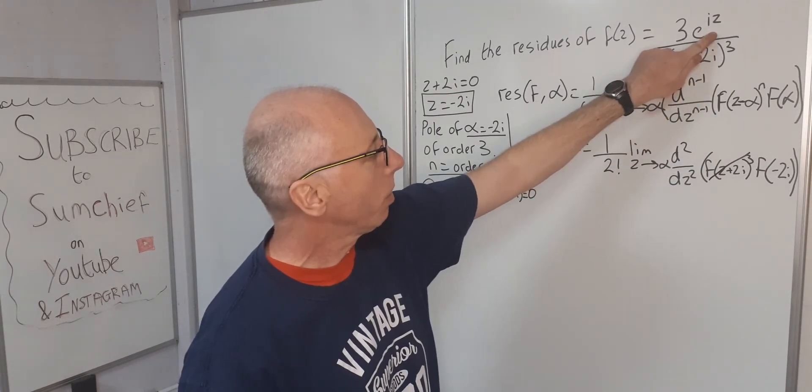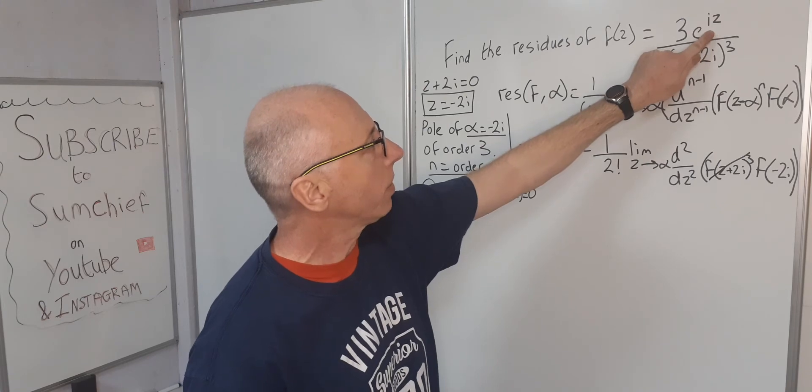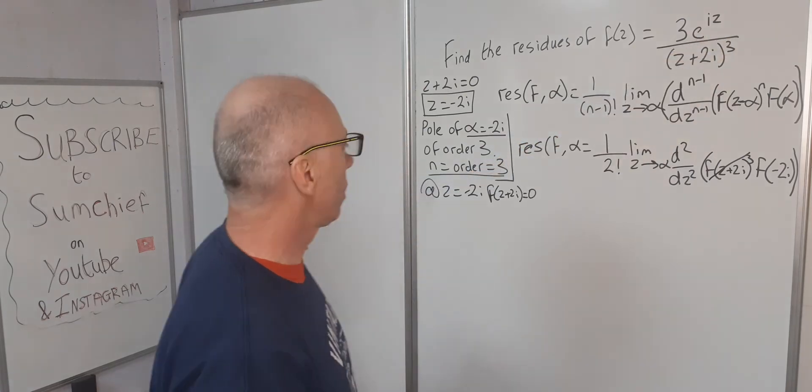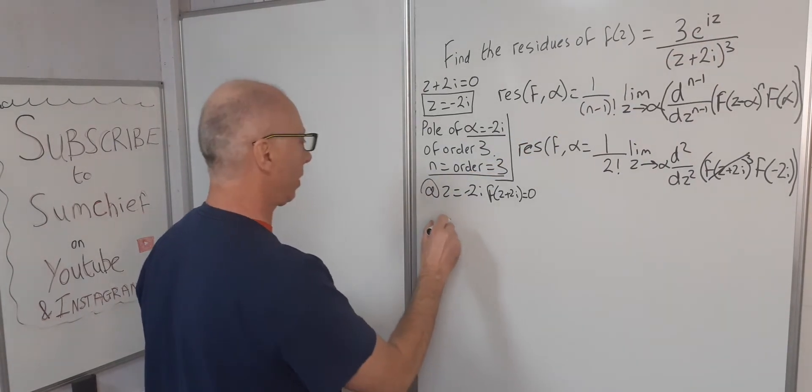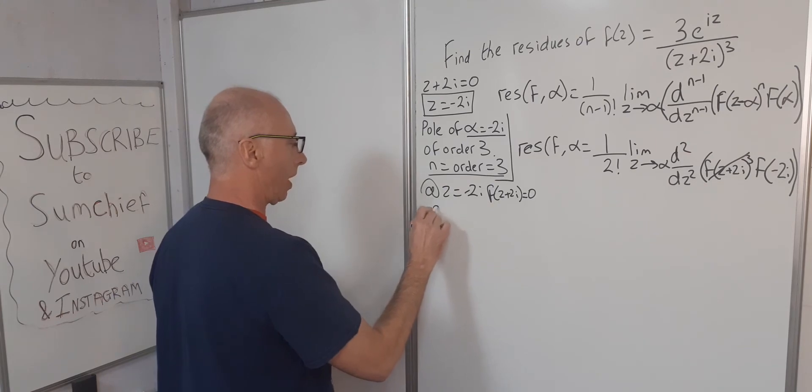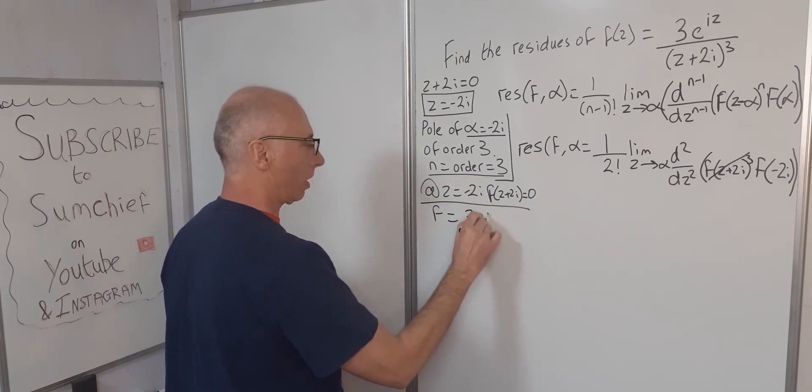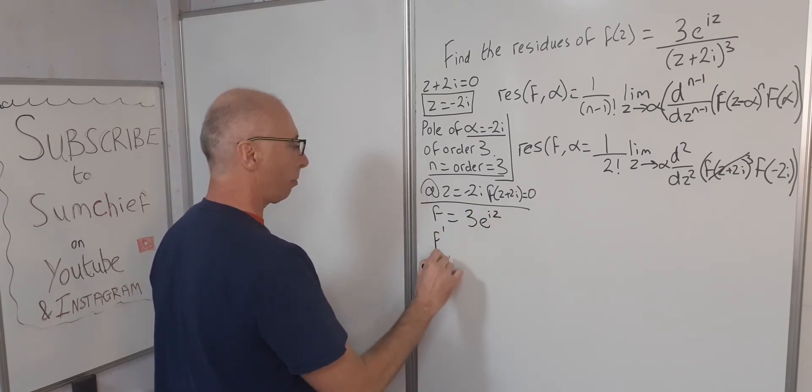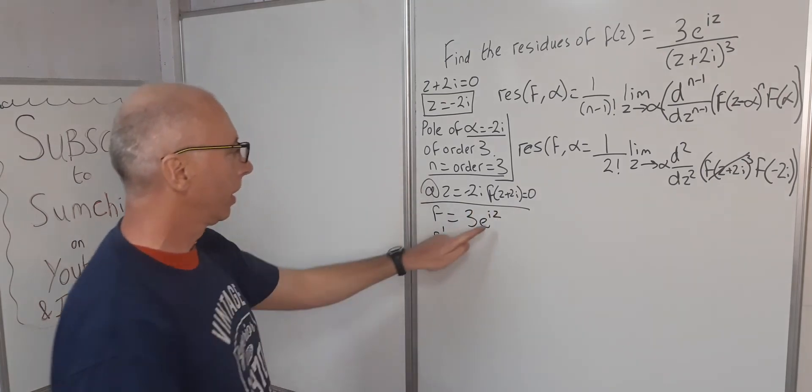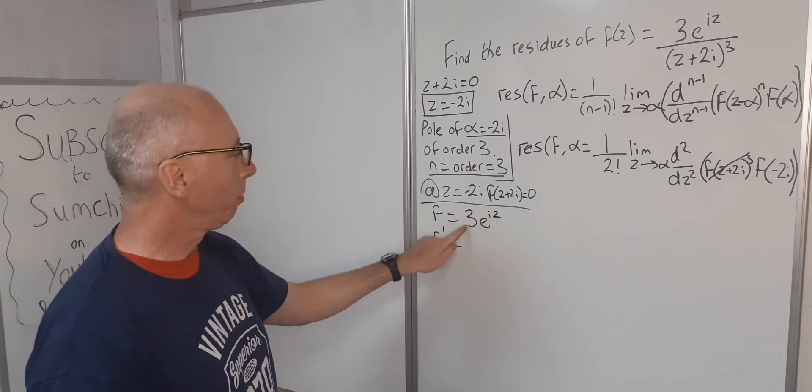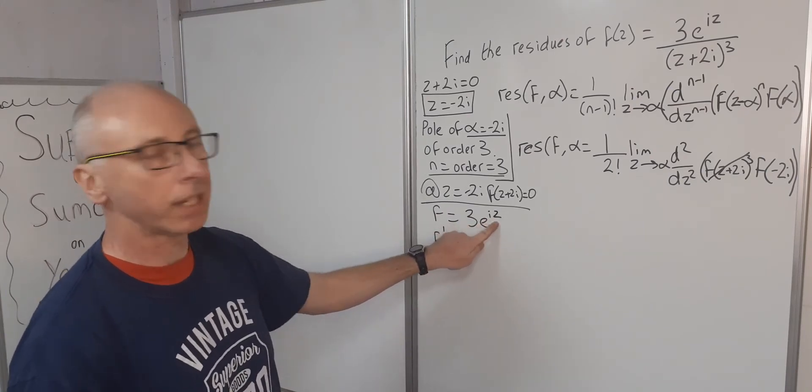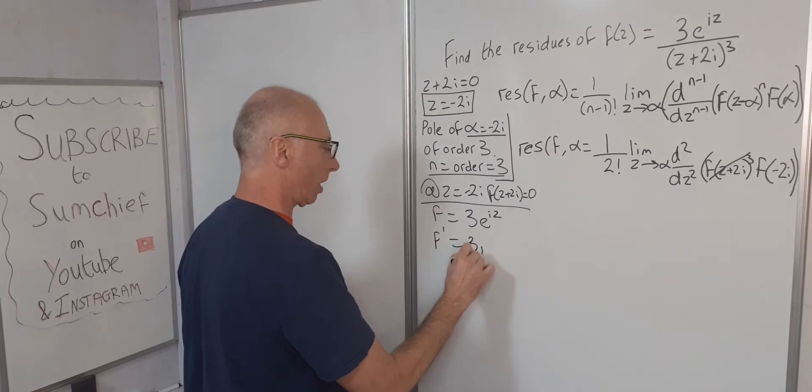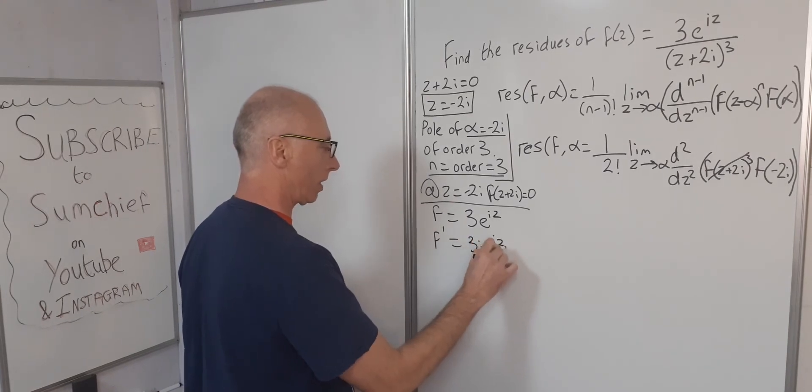So now what we're left with, we need to find the derivative of this function here. So 3e^(iz). f equals 3e^(iz). f prime: i is a constant multiple, bring that to the front, and the iz stays. So now we've got 3i·e^(iz).